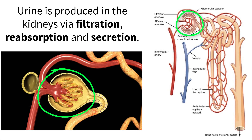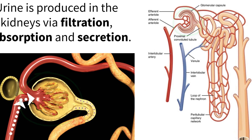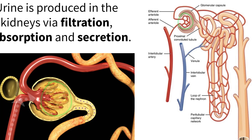Blood from the afferent arterial, which is branched from the renal artery, is filtered through a specialized capillary that exists within the renal corpuscle, and the created liquid, called filtrate, continues to move down the proximal convoluted tube.